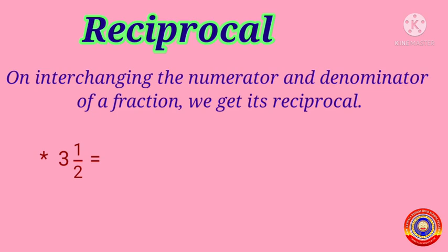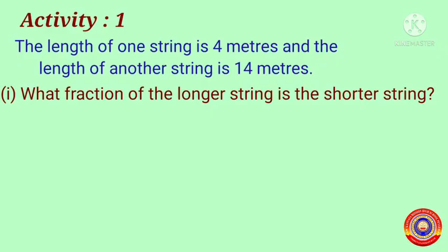That is, three and one-by-two is equal to three multiplied by two plus one, all over two, that is equal to seven-by-two. Then the reciprocal of seven-by-two is equal to two-by-seven. Is it clear for you?